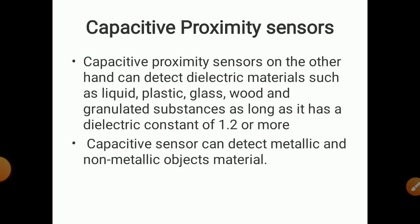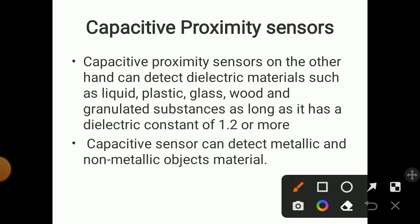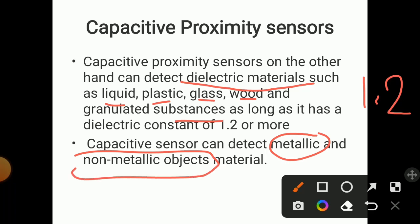We will now study the capacitive proximity sensor. The capacitive proximity sensor can detect dielectric materials such as liquid, plastic, glass, wood, and granulated substances, as long as the dielectric constant is greater than 1.2. Unlike inductive sensors, the capacitive sensor can detect both metallic and non-metallic objects.